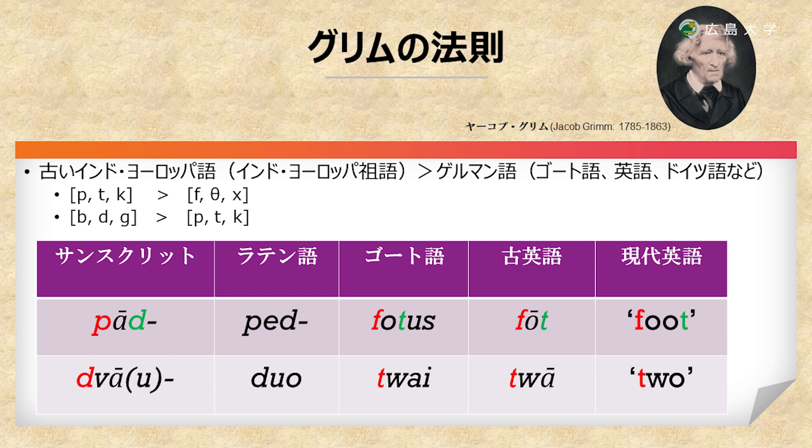地図で色のついたところが現在のその語族が話されている地域となります。ここでは歴史言語学の成果の中で有名なグリムの法則というものを紹介してみます。グリムというのはグリム童話を編集したグリム兄弟のお兄さんです。グリムの法則というのは、古いインド・ヨーロッパ語（インド・ヨーロッパ祖語）から英語やドイツ語などのゲルマン語に変わるときに起こった音韻変化のことです。